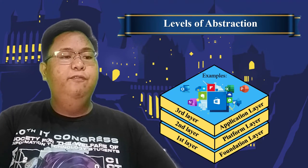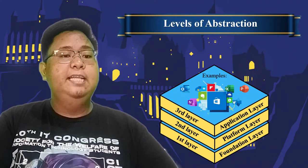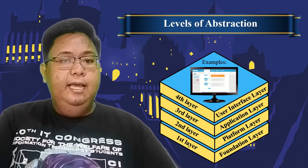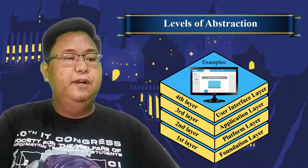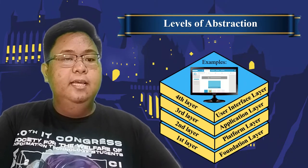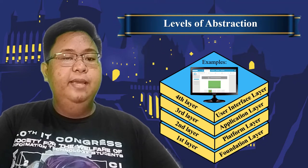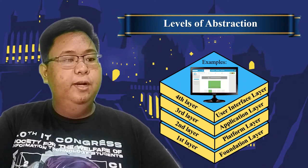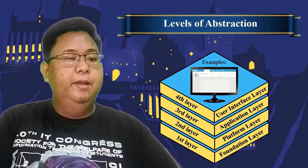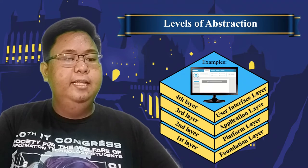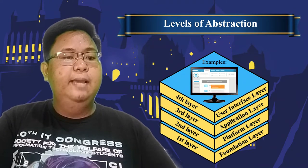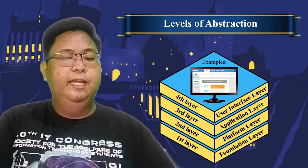The fourth and last layer will be the user interface layer. It is how the user interacts with an application. This layer may include displays, keyboards, and mouse, and the appearance of a desktop.